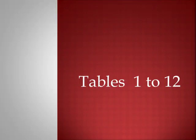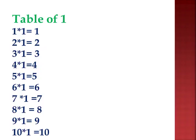Hello everyone! In this video we'll be learning tables from 1 to 12. You'll be seeing the tables and hearing the voice, so you'll learn very fast. Get ready! This is the simplest table — table of one. One ones are 1, two ones are 2, three ones are 3, four ones are 4, five ones are 5, six ones are 6, seven ones are 7, eight ones are 8, nine ones are 9, ten ones are 10.